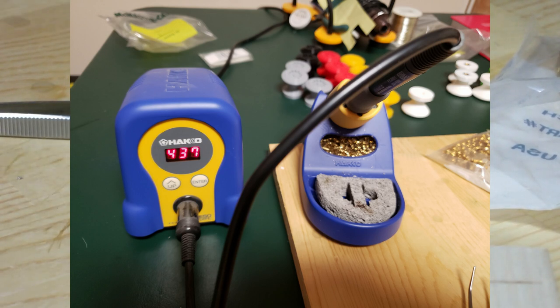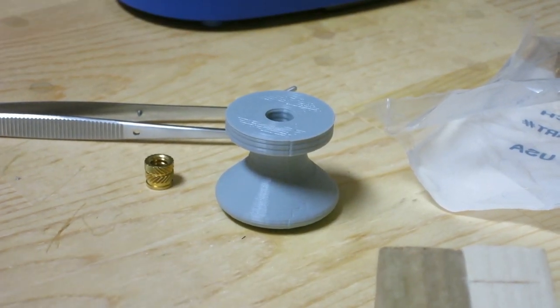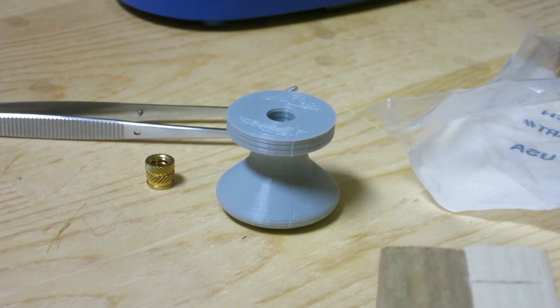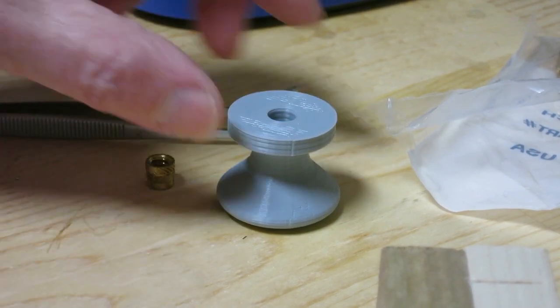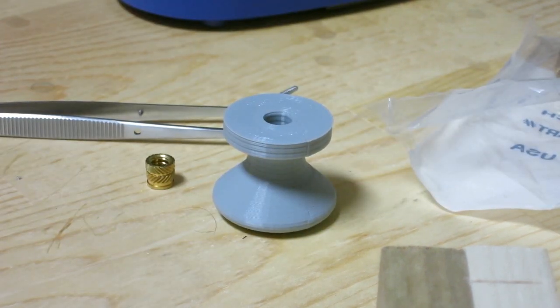My soldering iron is set to 437 degrees Fahrenheit, which is 225 degrees Celsius. I chose that temperature because the extrusion temperature of this plastic for the 3D printed knobs is 205 degrees.